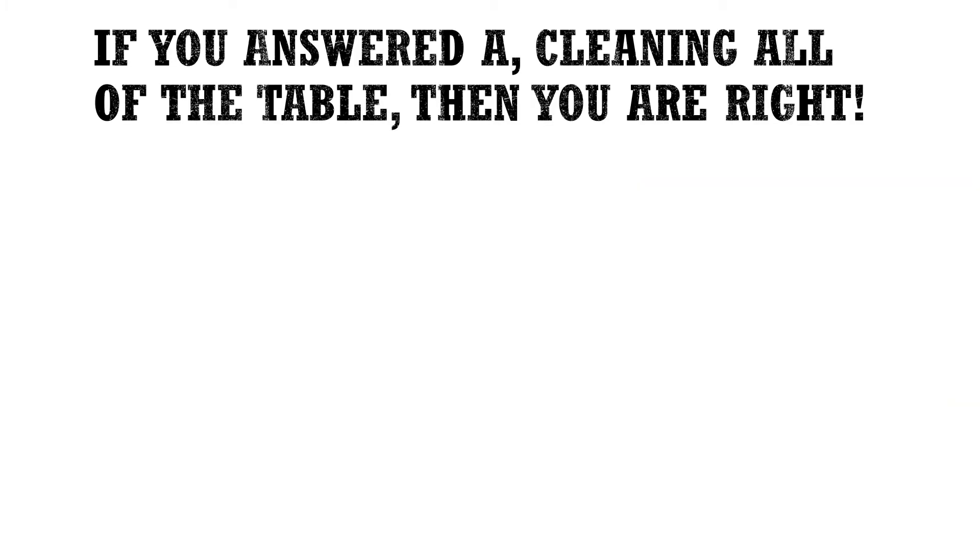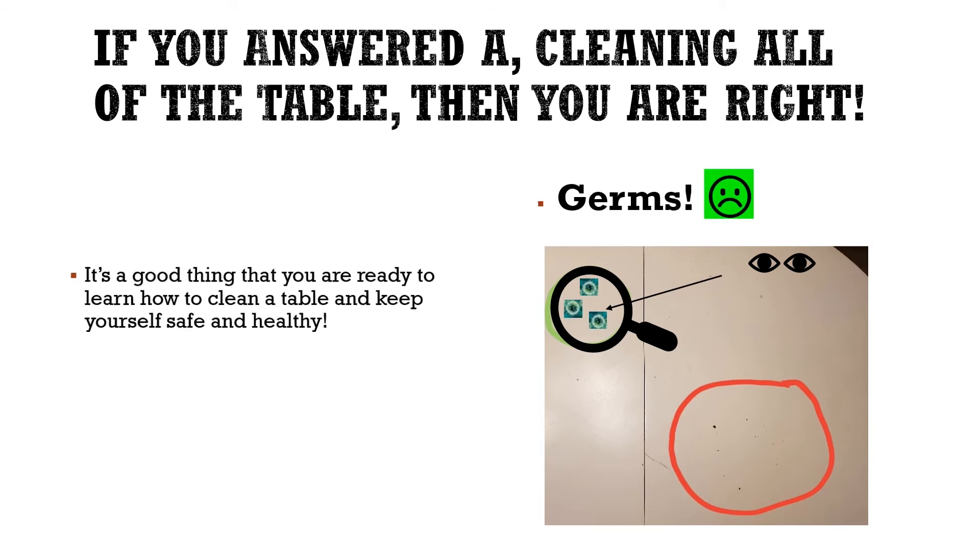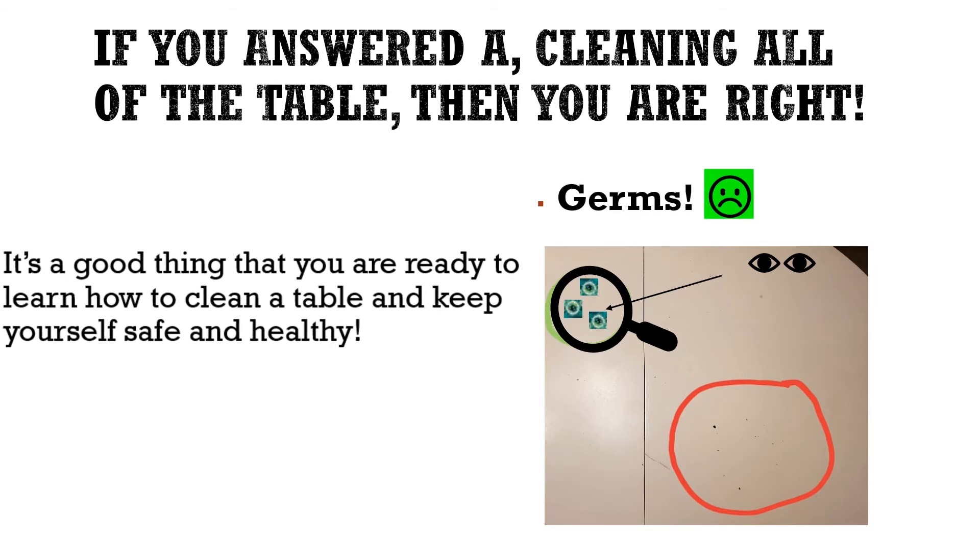If you answered A, cleaning all of the table, then you are right. What do you think is hiding under the green top circle, even though there are no crumbs? Germs. It's a good thing that you are now ready to learn how to clean a table and keep yourself safe and healthy.